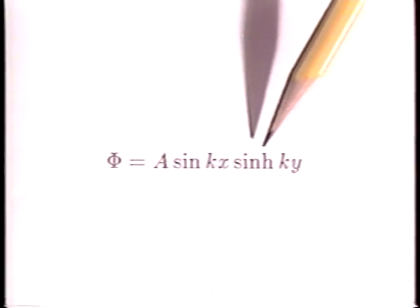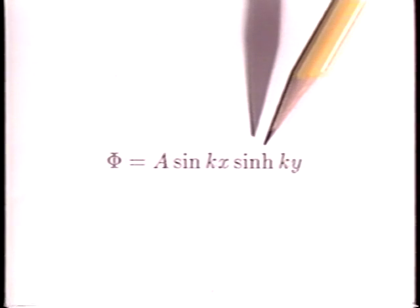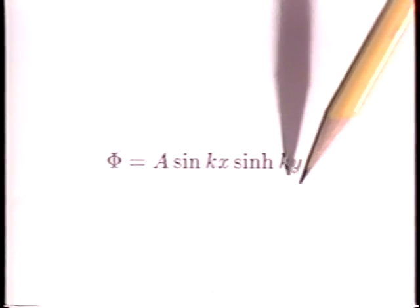The hyperbolic sine function, which is a combination of exponentials, represents the essentially exponential decay in a direction perpendicular to the direction of periodicity.